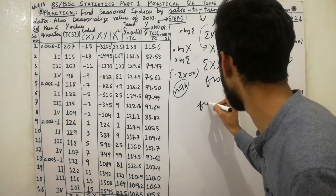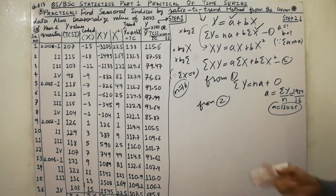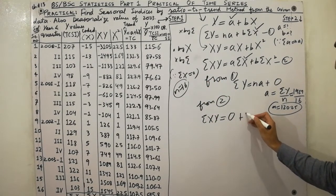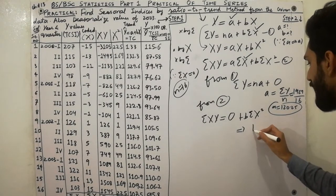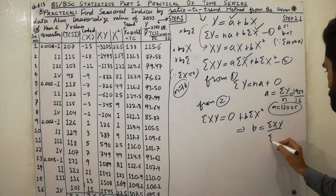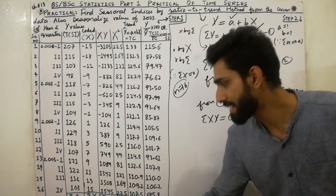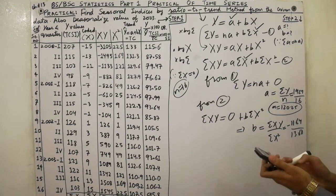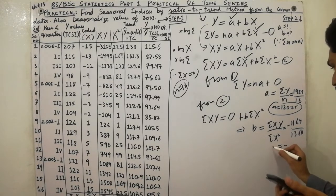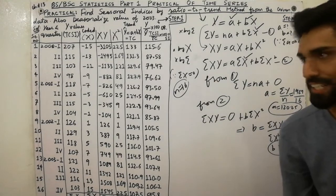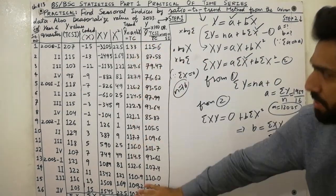For the second equation, since Σx is zero, we get Σxy = bΣx². Therefore b equals Σxy divided by Σx². Σxy is given as minus 2164, and Σx² is 1360. So b equals minus 2164 divided by 1360, giving the value of minus 0.825. Now putting the values of a and b into y = a + bx, you can easily calculate the trend values.